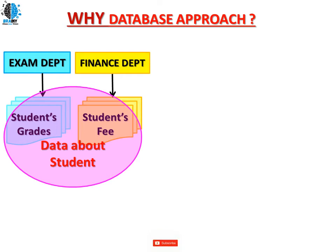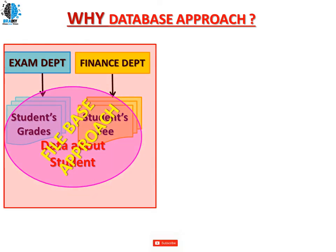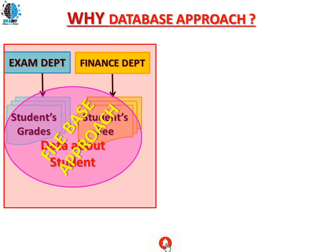Each user maintains separate files and programs to manipulate these files, because each requires some data not available from other users' files. This redundancy in defining and storing data results in wastage of storage space and redundant efforts to maintain common up-to-date data. This entire approach is called the file-based approach or traditional file system, wherein redundant data will be there and updation of redundant data is not possible.